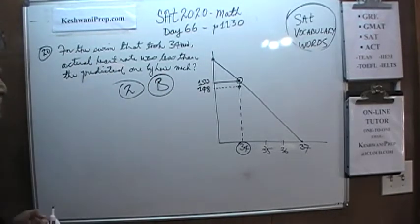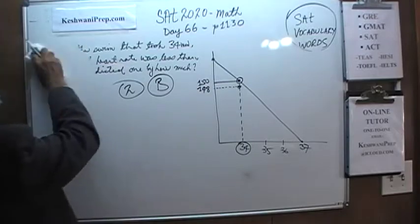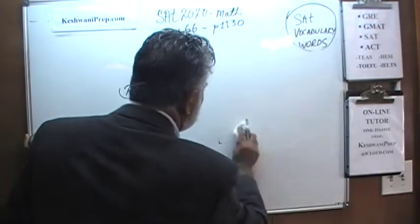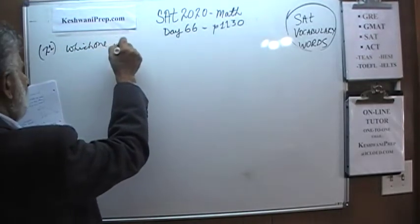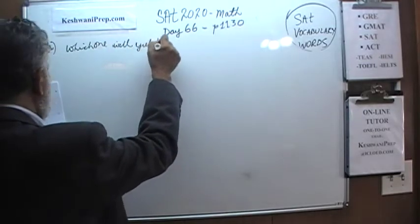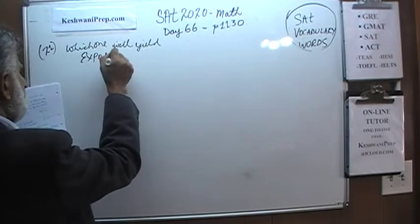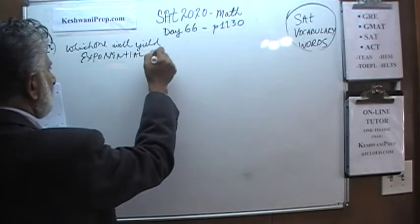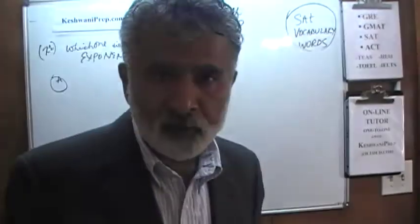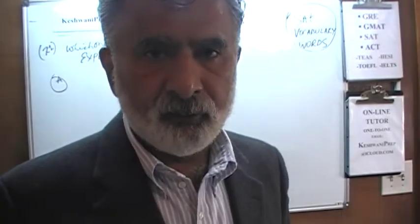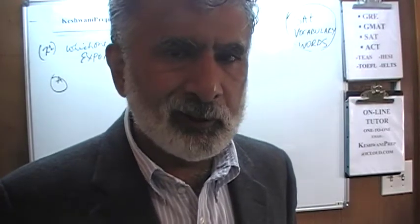All of that for that simple thing. The actual heart rate, which is 148, was less than the predicted one by 2 heartbeats. The answer is B. That was number 20. Let's do the next one, shall we? Number 21 asks: which scenario will yield exponential growth? We'll be presented with four different scenarios where we have some money in the bank growing over time, and our job is to figure out which one gives exponential growth.